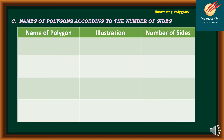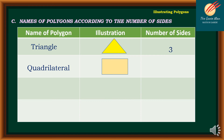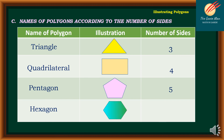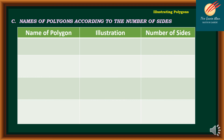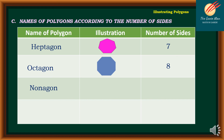Next, the names of polygons according to the number of sides: triangle has 3 sides, quadrilateral has 4 sides, pentagon has 5 sides, hexagon has 6 sides, heptagon has 7 sides, octagon has 8 sides, nonagon has 9 sides, and decagon has 10 sides.